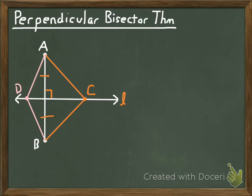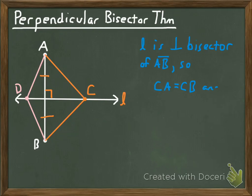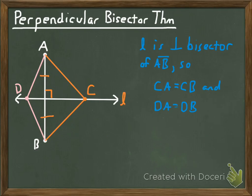To put that in terms of the picture: since L is the perpendicular bisector of segment AB, the distance from C to A equals the distance from C to B, and the distance from D to A equals the distance from D to B - truly any point on line L is equidistant from A and B. That's the perpendicular bisector theorem. The converse is also true: any time you can show that a point is equidistant from the endpoints of a segment, that point lies on the perpendicular bisector of that segment. We'll be using both in the next couple of examples.